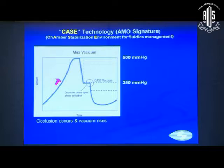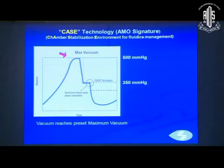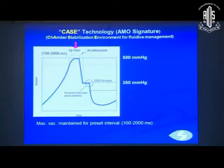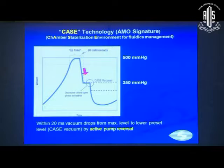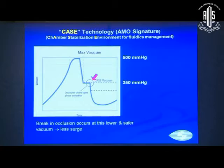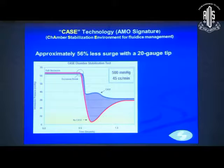The CASE technology — Chamber Stabilizing Environment for fluidics management — works as follows: when occlusion occurs, vacuum rises to a preset maximum of about 500 mmHg, which can be maintained for 100 to 2000 ms. Within 20 ms, the vacuum drops by active pump reversal to a lower level called the CASE vacuum, set at about 350. When the occlusion finally breaks, it does so at the lower CASE vacuum rather than at the maximum, resulting in less surge — reducing surge by approximately 56% with a 20-gauge tip.